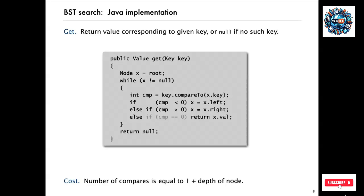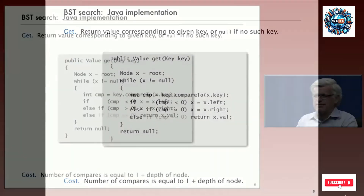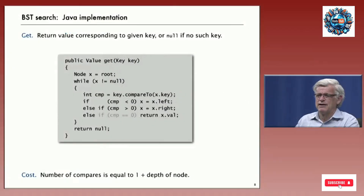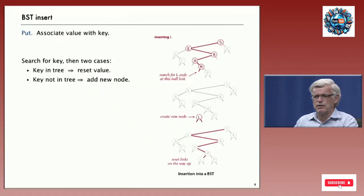What's the cost? We go down a path in the tree, so the number of compares is one plus the depth of the node in the tree.